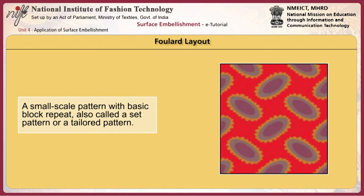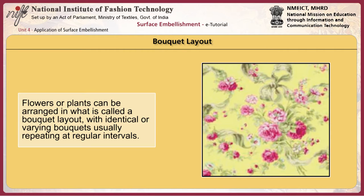A florid layout is a small-scale pattern with a basic block repeat, also called a set pattern or tailored pattern. Originally the term florid referred to a soft lightweight silk cloth; classic florids are small-scale, regular-shaped geometrics, usually in a set layout. Flowers or floral motifs can be arranged in what is called a bouquet layout, with identical or varying bouquets usually repeating at regular intervals. A five-point bouquet is a layout arranged so that when fabric is cut to cover a sofa cushion, one bouquet is in the center and a quarter of a bouquet shows at each corner.